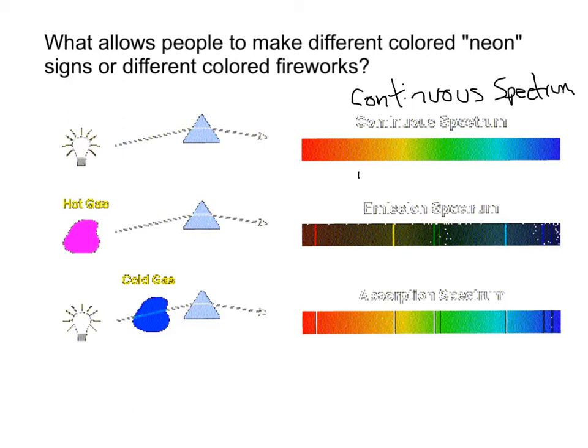It kind of doesn't make sense because you would think that white light would be no colors and black would be all the colors. Because with crayons, you put all the colors together, it makes black, not white. But the thing is, black is actually the absence of color or any light whatsoever. And white light is the presence of all the colors mixed together. So the prism will separate them out...